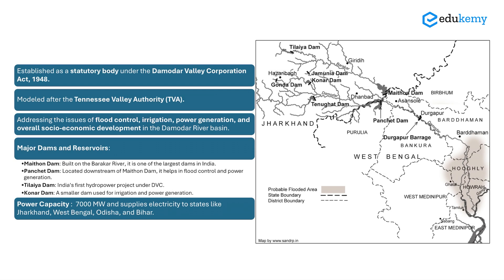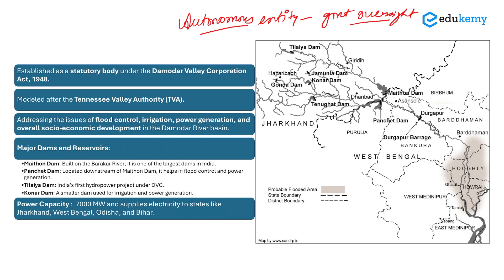Damodar Valley Corporation — you might be surprised to know why this is called a corporation while multiple other projects are not. The term 'corporation' signifies that it is an autonomous entity, though it works under government oversight. Damodar Valley Corporation is the first such corporation in India, established as a statutory body under the Damodar Valley Corporation Act 1948, and it was modeled after the Tennessee Valley Authority of USA — that is why it is sometimes called the TVA of India.